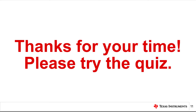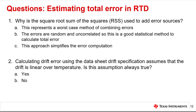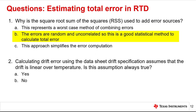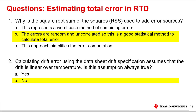That concludes this video. Thank you for watching. Please try the quiz to check your understanding. Question 1: Why is the root sum of squares used to add error sources? The correct answer is B — the errors are random and uncorrelated, so this is a good statistical method to calculate total error. Question 2: Calculating drift error using the datasheet drift specification assumes that drift is linear over temperature. Is this assumption always true? The correct answer is B — No, drift error cannot be assumed to be linear over temperature.